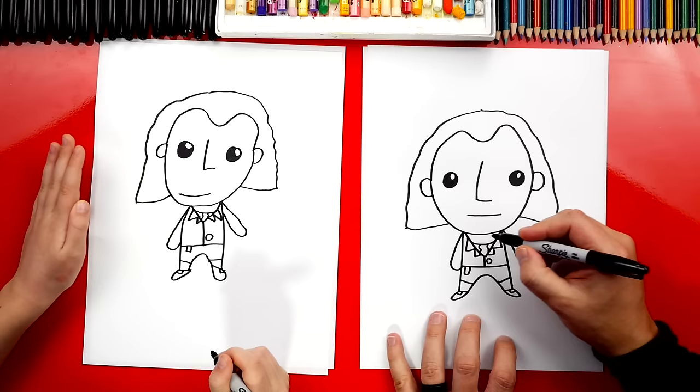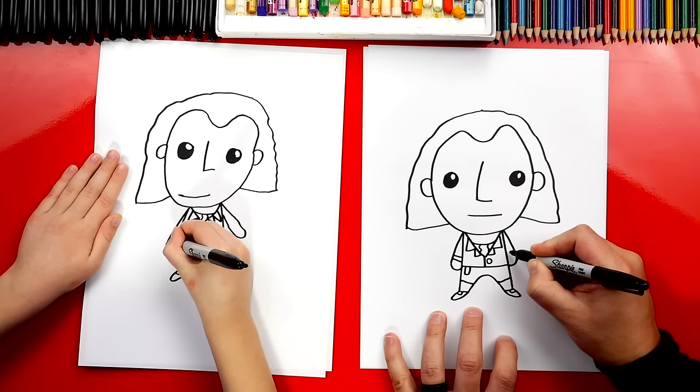Okay. And then I'm going to finish the hand over here. And let's draw two lines for the end of his sleeve on both arms. And we did it, Austin. We finished drawing James Madison.